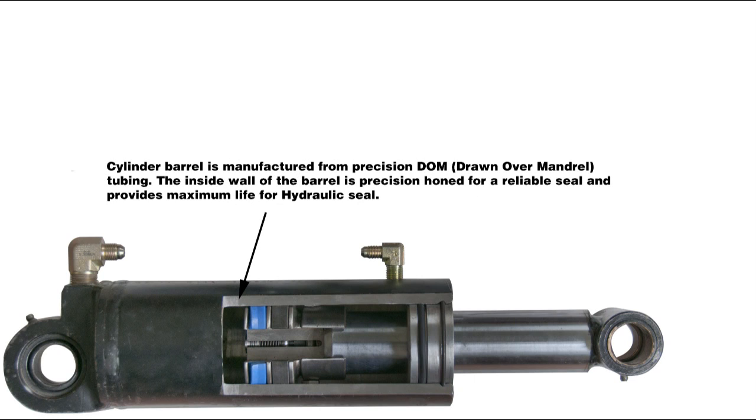The cylinder barrel is manufactured from precision DOM, drawn-over mandrel, tubing. The inside wall of the barrel is precision-honed for a reliable seal and provides maximum life for the hydraulic seal.